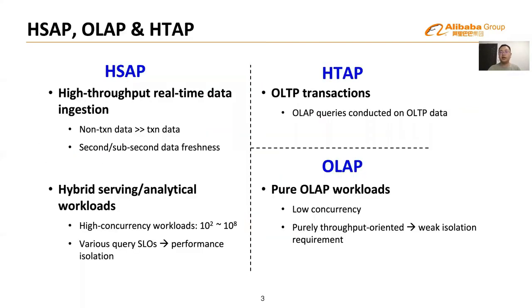Compared with OLAP and HTAP, the HSAP scenario poses very different requirements on system design and optimization. First, an HSAP system must be able to ingest high-speed incoming data in real-time. The ingestion rate is very high, and only a small portion of data is imported from front-end or OLTP databases — for instance, tens or even hundreds of page views may trigger one purchase transaction. Data ingestion in HSAP is less transactional, and its volume is far bigger than in typical HTAP scenarios. Ingestion must also be conducted in real-time to guarantee data freshness; the latency of ETL processes in OLAP solutions is no longer acceptable.